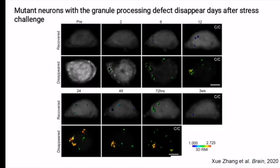To clarify the difference between the recovered and disappeared mutant neurons in processing of TIA1 puncta, we reconstructed the 3D shape of TIA1 puncta in those two categories. After data analysis, neurons with severe granule misprocessing died days after stress challenge. Therefore, we argue that stress granule misprocessing is pathogenic in ALS.